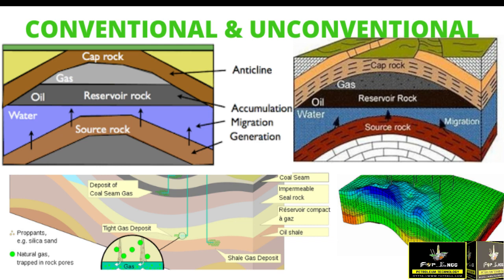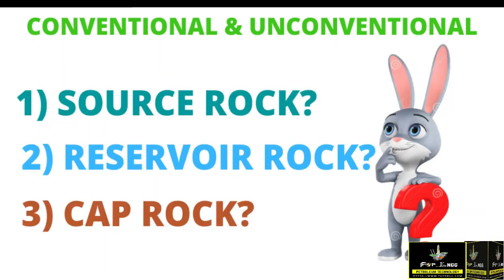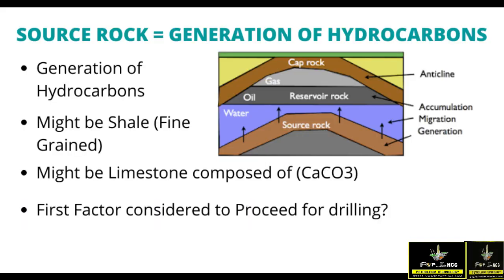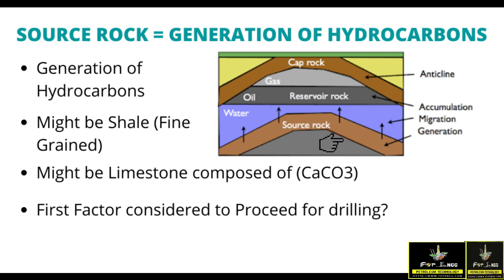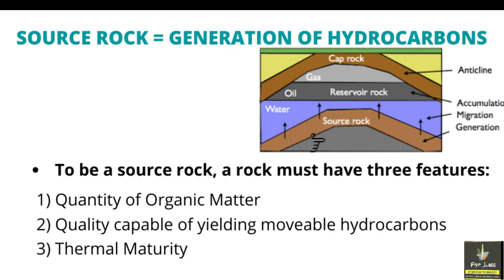Hello friends, today I'm going to tell you about conventional and unconventional reservoirs. But before going forward, it is very important to know about source rock, reservoir rock, and cap rock, and their role in conventional and unconventional systems. Source rock is basically where the generation of hydrocarbons takes place. It might be shale or limestone. Key qualities include the quantity of organic matter and the quality of yielding movable hydrocarbons.